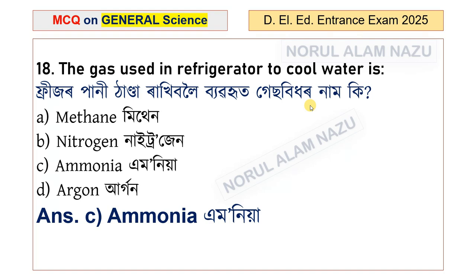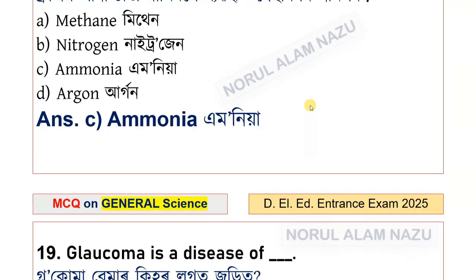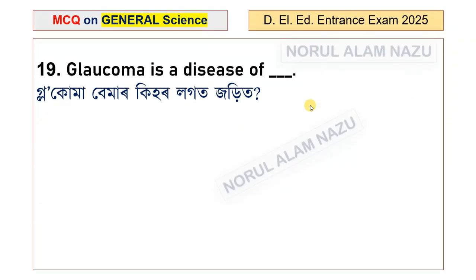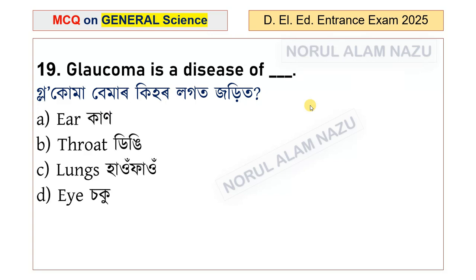Glaucoma is a disease of the eye. The question relates to identifying which organ is affected — ear, throat, lungs, or eye — and the answer is the eye.